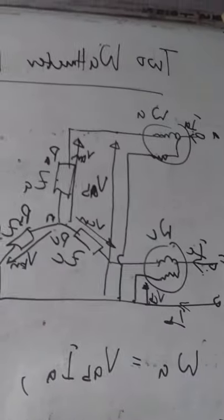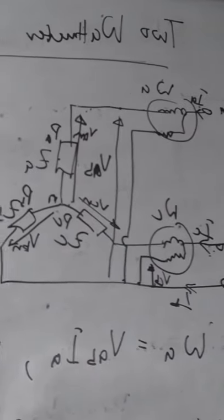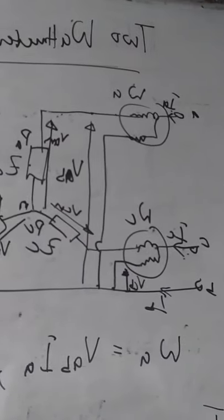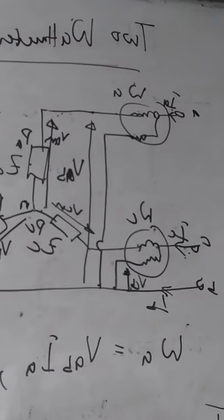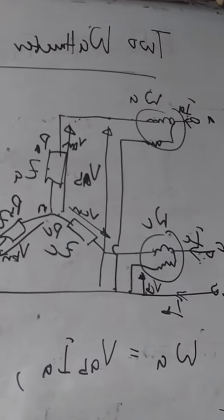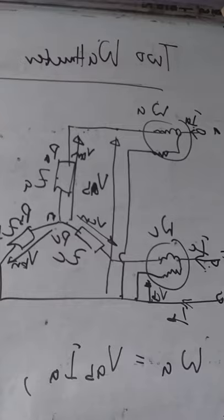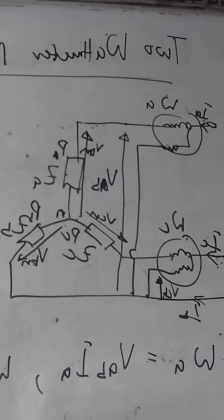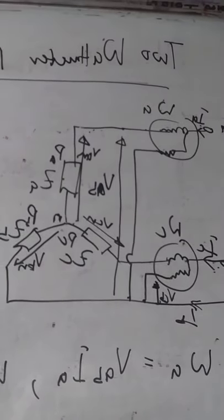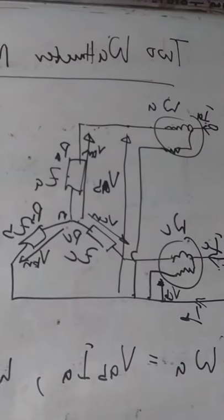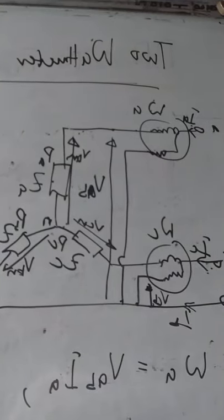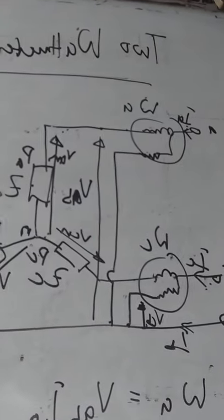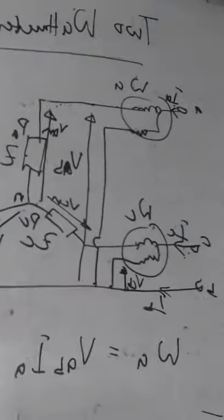The difference lies in the fact that with single watt meter method you can only use it to measure power in balanced systems alone, but with two watt meter method you can use it to measure power in balanced or unbalanced systems, whether it is star or delta connected.